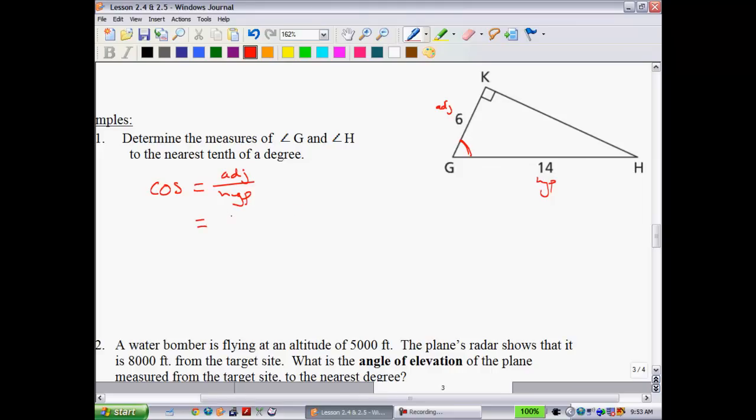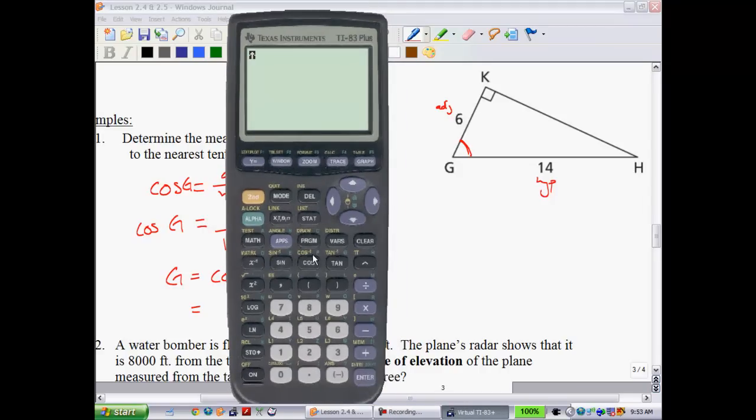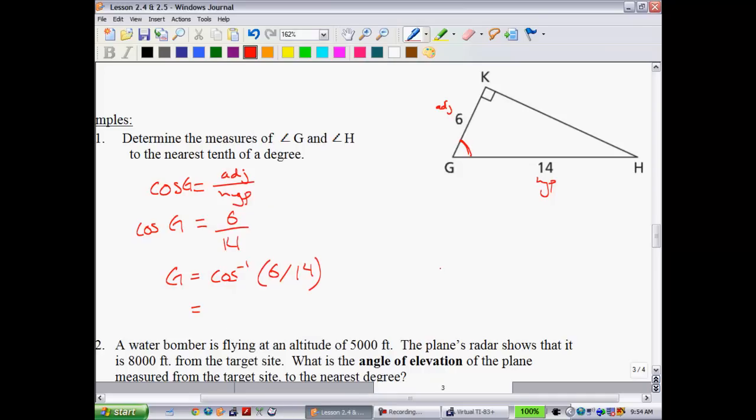So cosine is equal to your adjacent over hypotenuse. And now we substitute in. The adjacent side was worth 6. The hypotenuse was 14. So the cosine of G is equal to 6 over 14. Lastly, to get G by itself, what we do is we take the cosine inverse. And we get G equals the cosine inverse of 6 over 14. Get your calculator out. Make sure, once again, that you are in degree mode. So this time we do the cosine inverse of 6 over 14. And it's set to round to the nearest tenth of a degree. So we would say that our answer is 64.6 degrees.